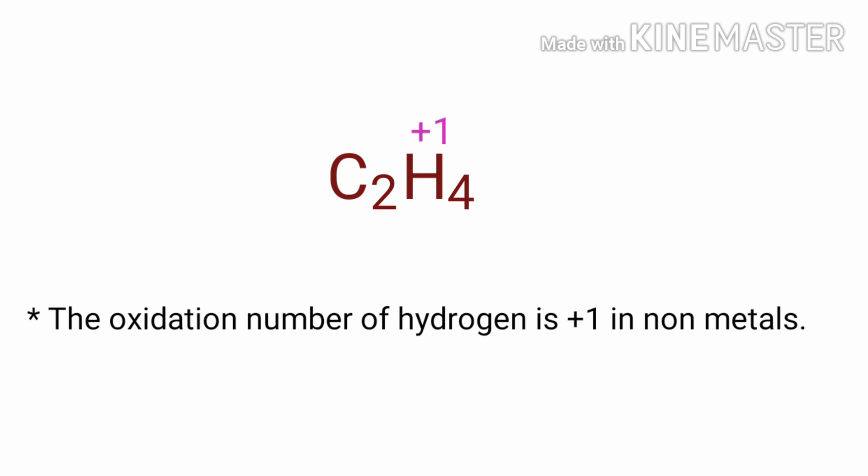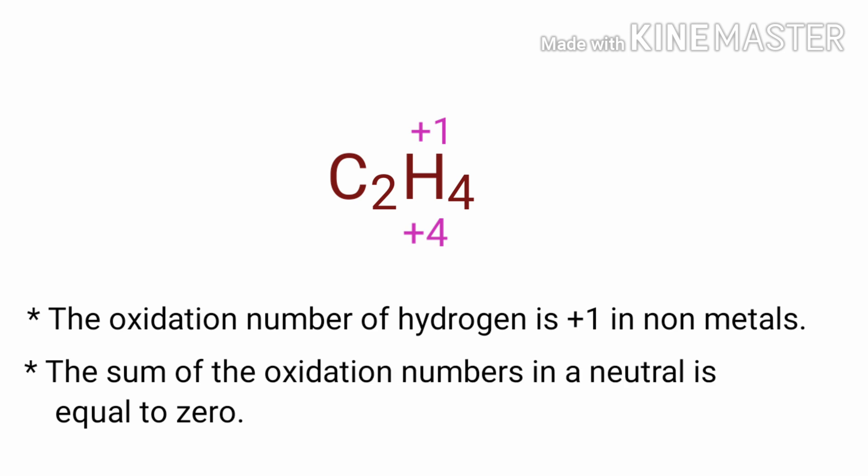We can write the oxidation number of the element above its symbol and the total oxidation number of the atoms below its symbol. As per rule, in a neutral compound, the numbers along the bottom must add up to zero.